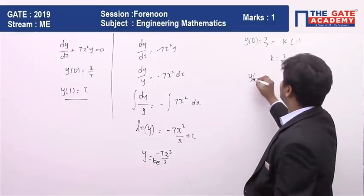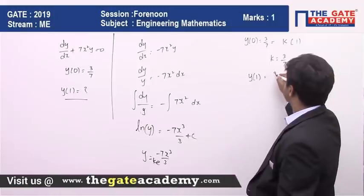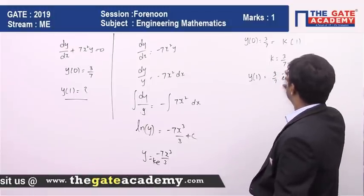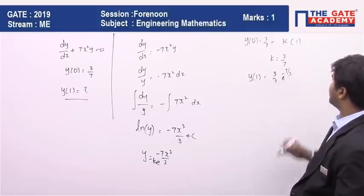Now I have to find the value of y at x = 1. So if I put the value of k which is 3/7 and x = 1, then I'm going to have the value which is (3/7)e^(-7/3).